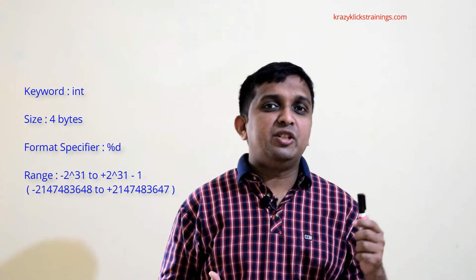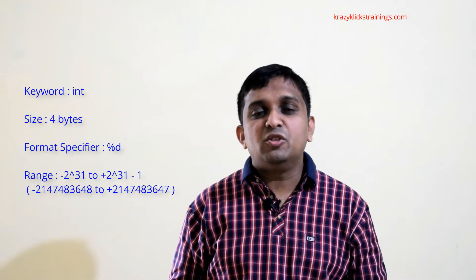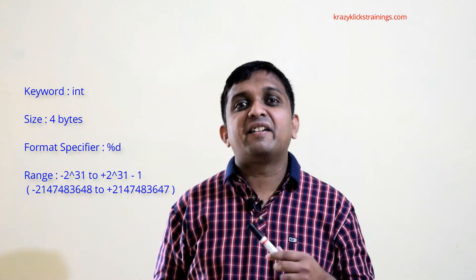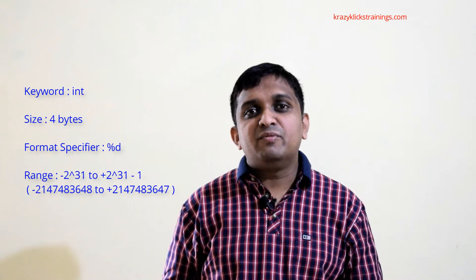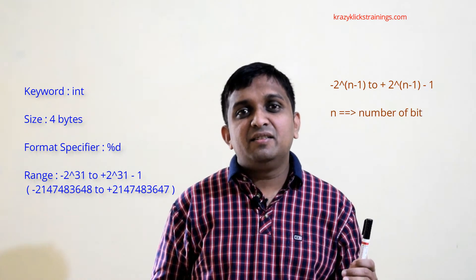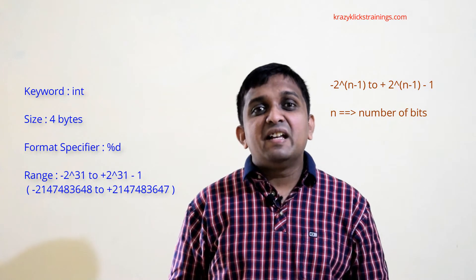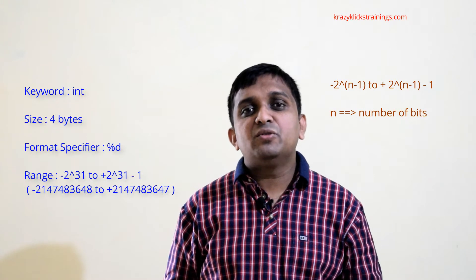For integer, the keyword is int and the size of integer is 4 bytes. This is operating system specific — on a 32-bit OS the size is 4 bytes, on a 16-bit OS it is 2 bytes. We are using a Linux operating system which is 32-bit, so for us the size of integer will always be 4 bytes. The format specifier for integer is %d. The range is calculated using the formula: minus 2 raised to n minus 1, to plus 2 raised to n minus 1, minus 1. For 4 bytes, the number of bits is 32, so the range becomes minus 2 raised to 31 to plus 2 raised to 31 minus 1.